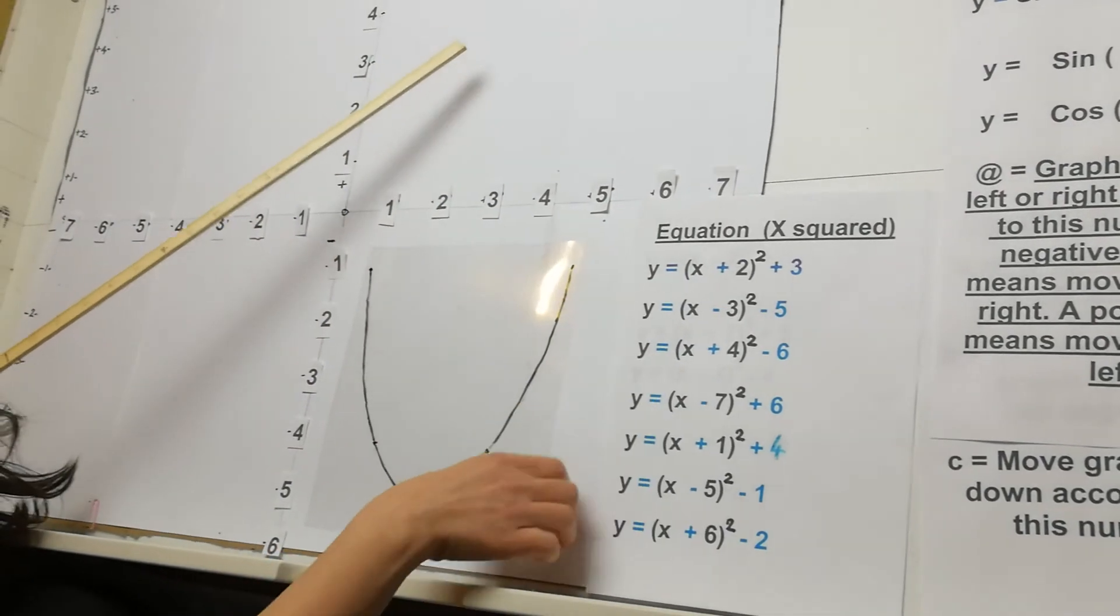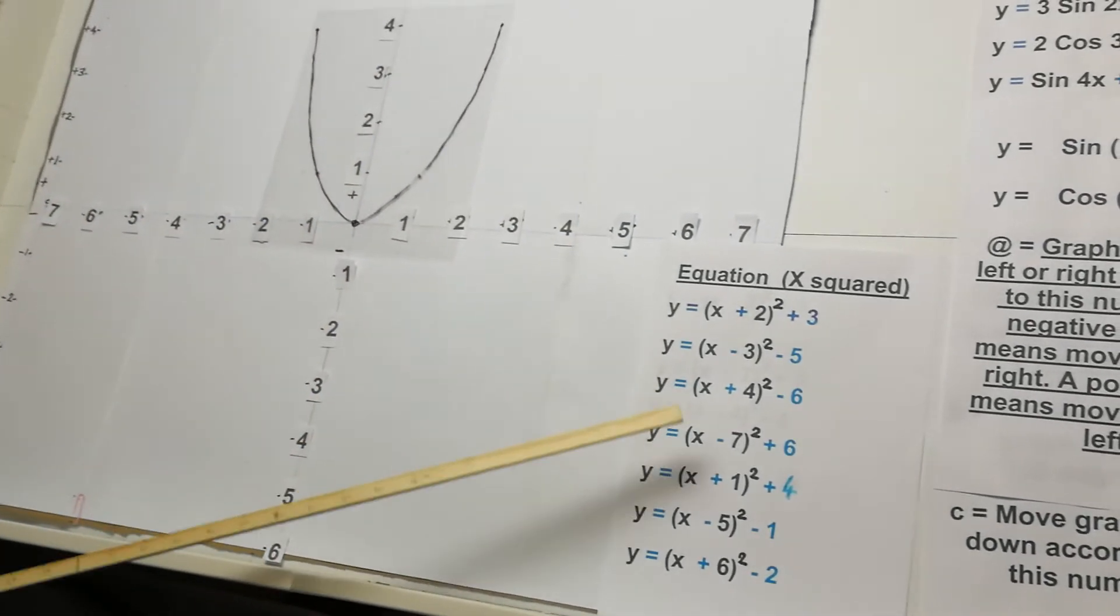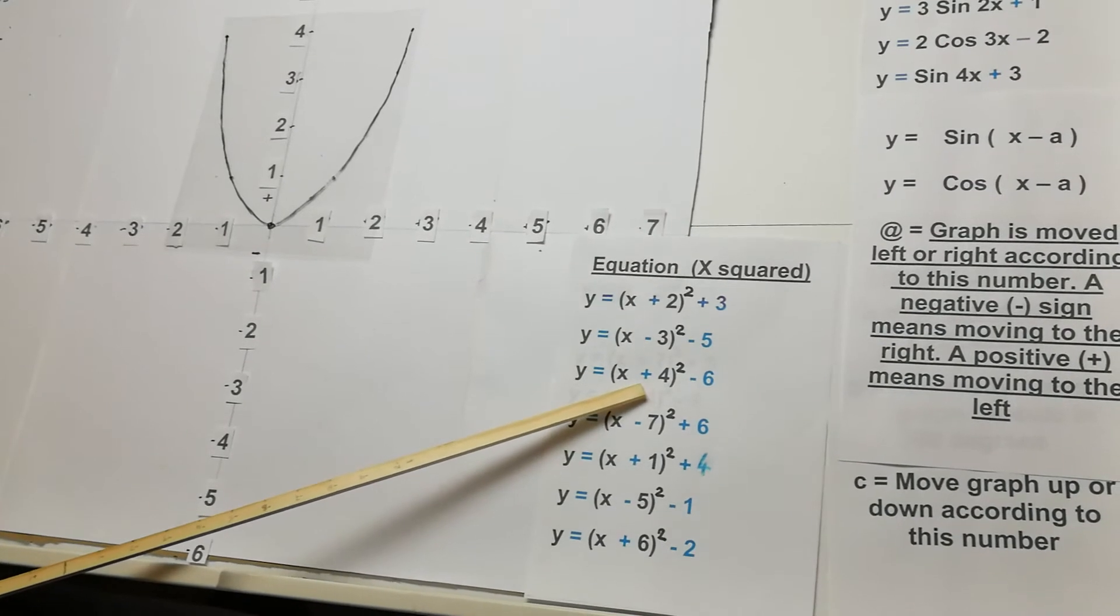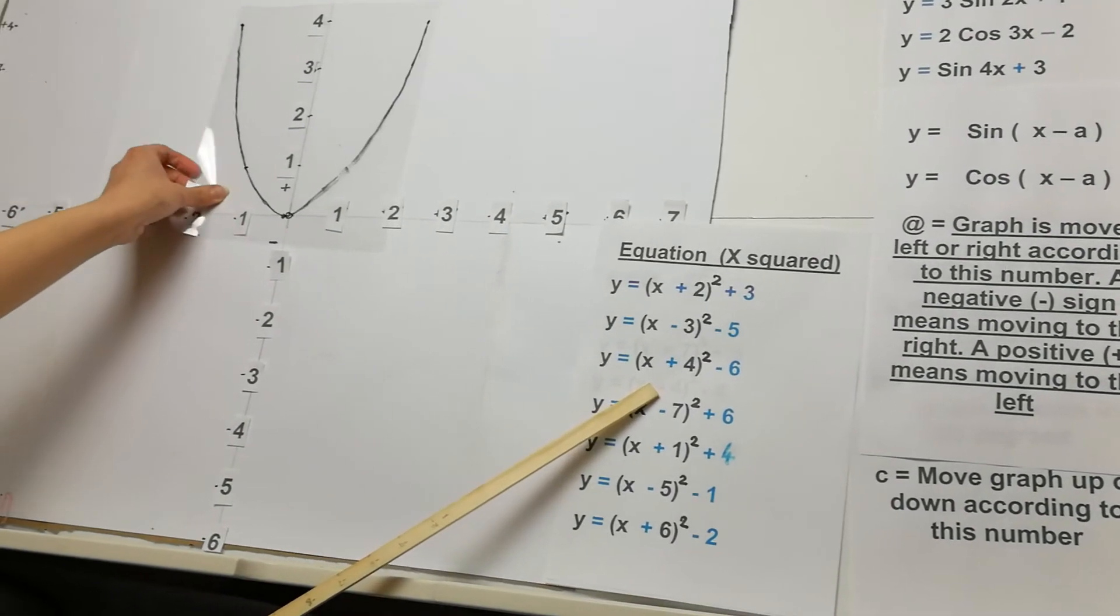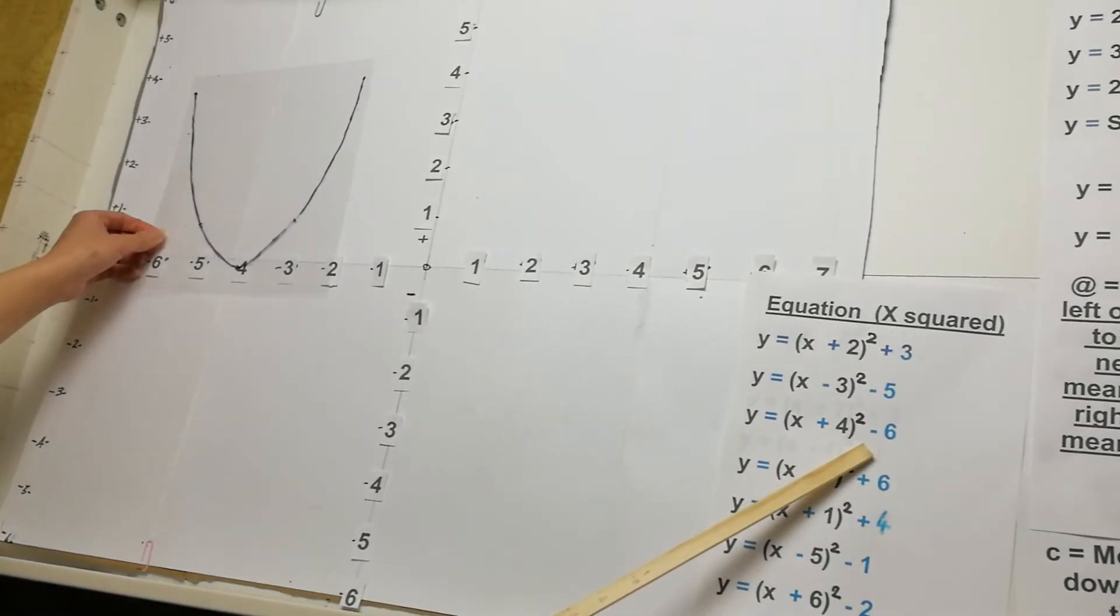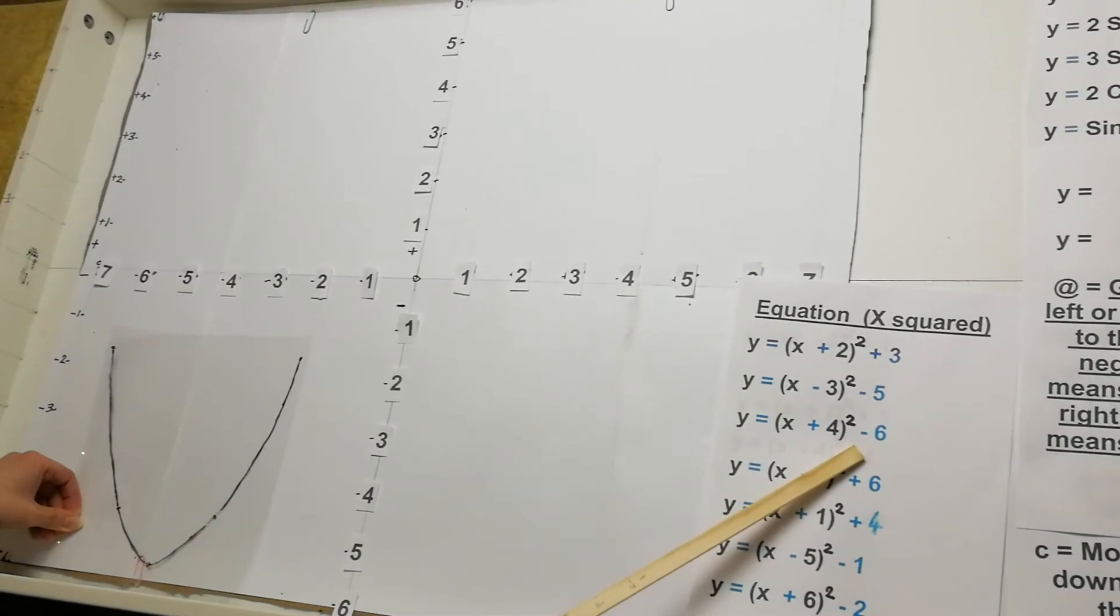The next one we've got, we've got y equals x plus 4 all squared, take away 6. So plus always means moving to the left by that number. So moving to the left by 4. And take away 6 means moving down by that number. So we just about can get it on here.